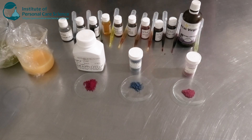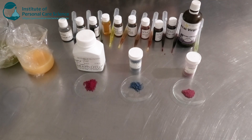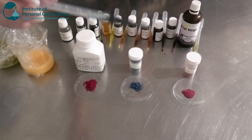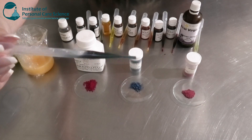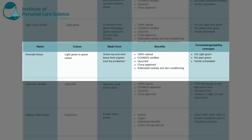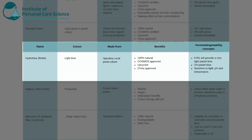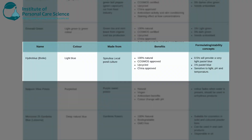You can also use extracts to add color to your cosmetic products. One example I have on hand is the Hydro Blue, also by Biola — a beautiful electric, dark blue color. It's made from spirulina sourced from a local pond culture. It's 100% natural, Cosmos approved, upcycled, and China approved. Looking at the color chart: in an emulsion, 0.5% provides a very light pastel blue, and 1% provides a darker blue — and you can use more to deepen that blue color further.